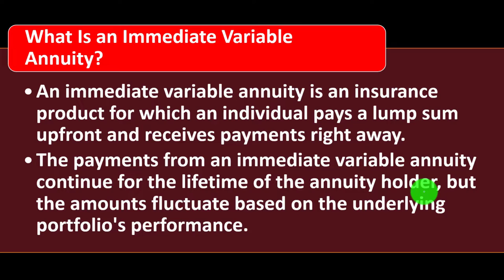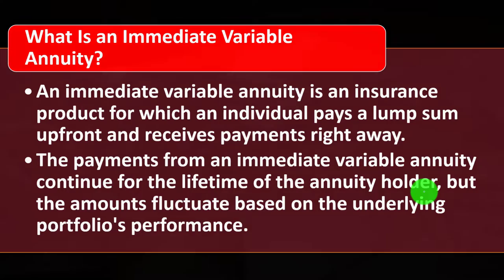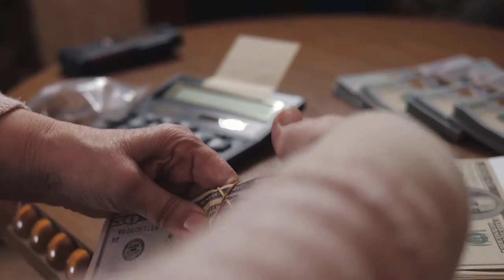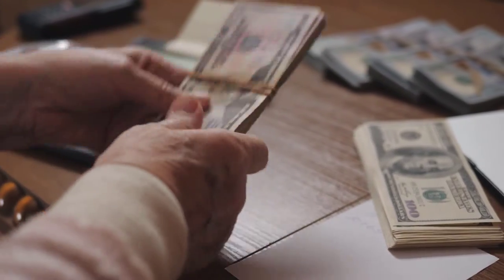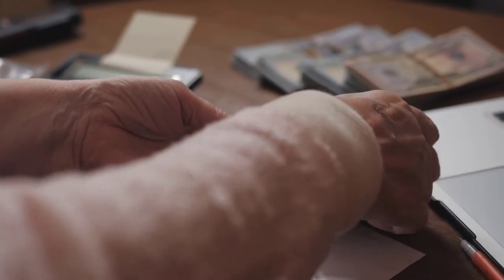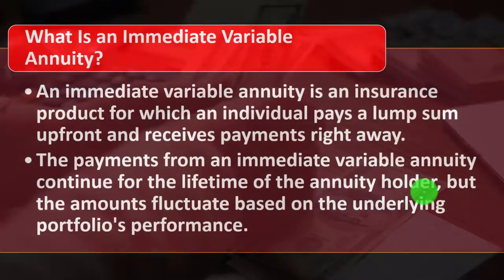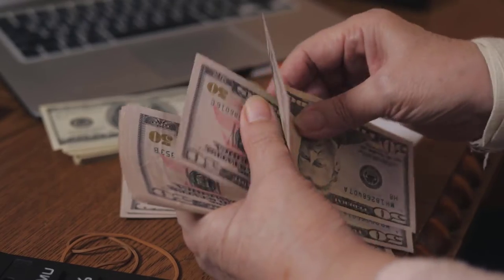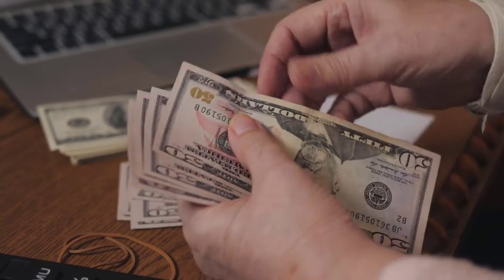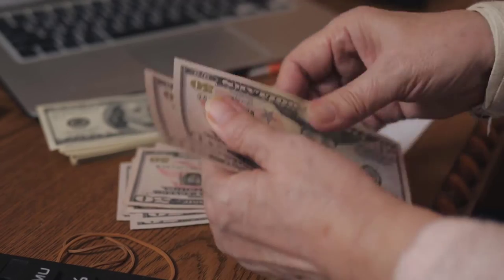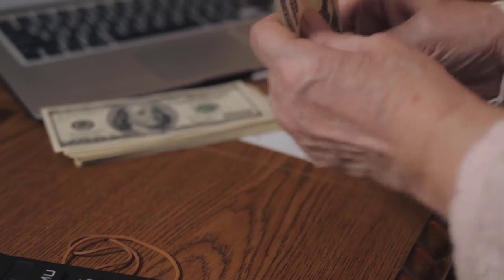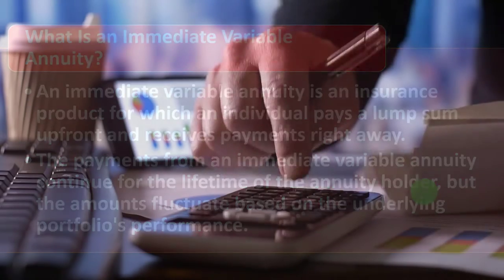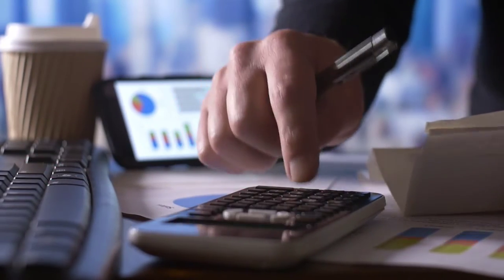How can that work? How much do you have to give right now in order to get payments for your entire life? The insurance companies are going to use actuarial tables — this is where estimates come in — to think about how long you're going to live. For one individual they can't do that well, but if you have a whole pool of individuals, they can use large-number calculations to determine the likelihood of payouts for these annuity calculations.